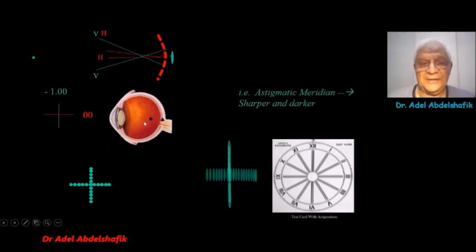Here, the error is in the vertical meridian. And this is the meridian that appears sharper and darker.